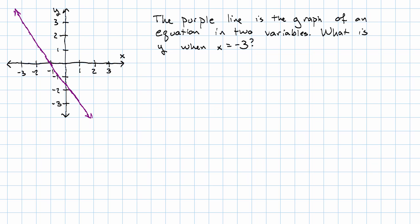What is y when x is negative 3? Looking at this graph, I see, so here's where x is negative 3. Here is the point on the line whose x coordinate is negative 3.